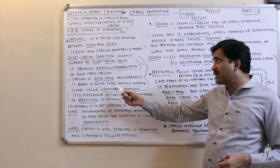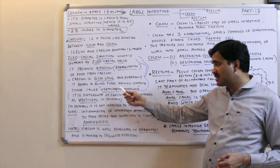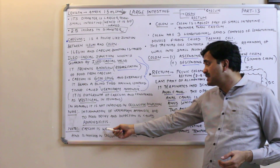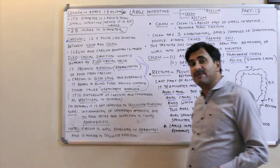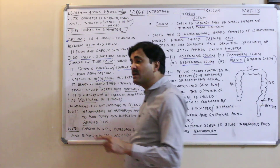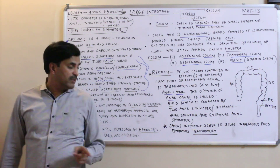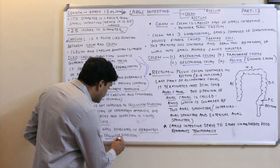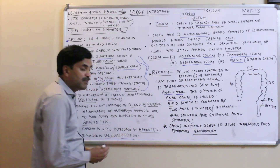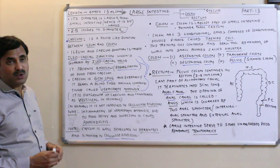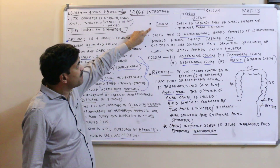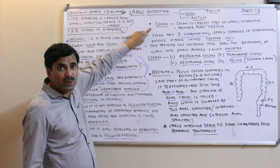The cecum is not well developed in humans because no cellulose digestion occurs there. However, the cecum is very well developed in herbivores, where it is involved in cellulose digestion. Now, moving to the next part of the large intestine: the colon.